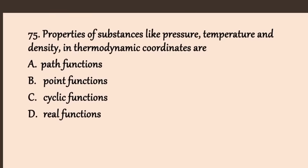Question 75: Properties of a substance like pressure, temperature, and density in thermodynamics are called — these depend only on the current state, not on the path taken. The answer is B, point function or state function.